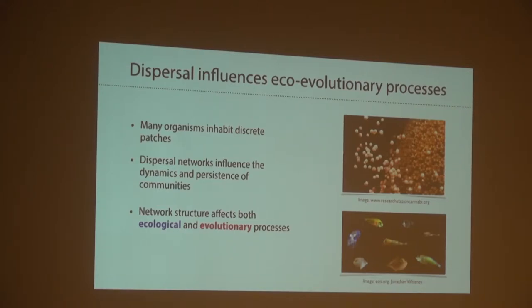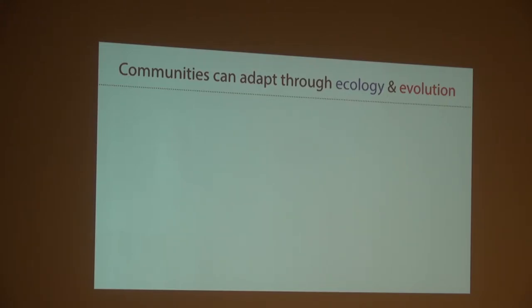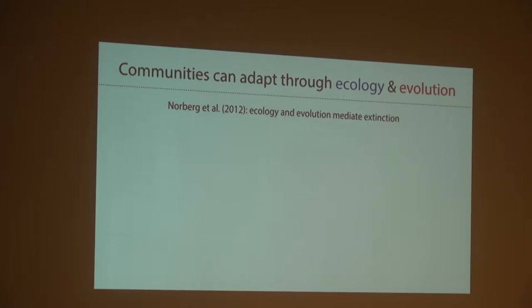I'll be talking about how the network structure of larval dispersal affects both ecological and evolutionary processes that affect the adaptive potential of spatially structured communities. Communities can adapt through both ecological and evolutionary processes. In terms of ecology, I'll be talking about competition, specifically interspecific competition — a coral community can persist at a patch because species better adapted to that environment can out-compete resident species.